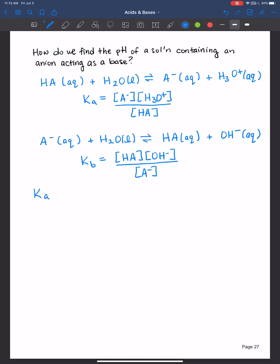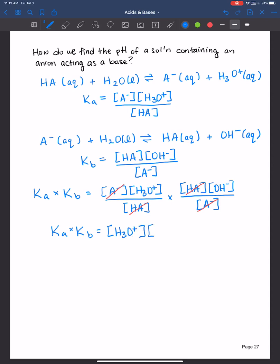Now let's say we multiply them together, Ka times Kb. Then we write their expressions down. And we see when we multiply that like terms are canceling out. The base is canceling out and the acid's canceling out. And what you have left over is Ka times Kb is equal to the concentration of the hydronium ion times the concentration of hydroxide, which you should recognize is the expression for Kw.